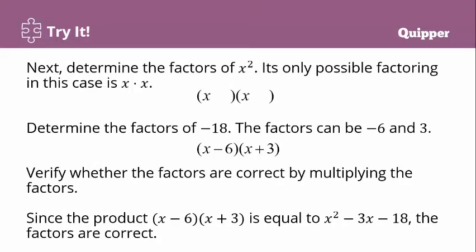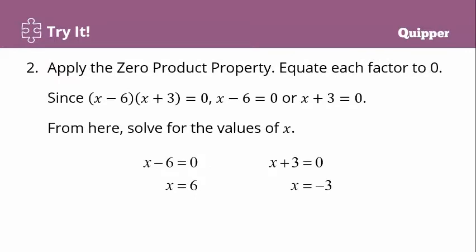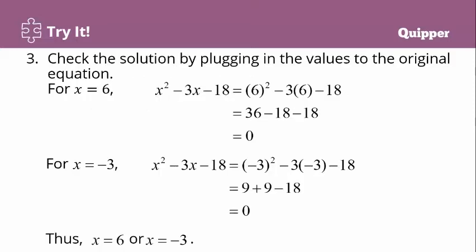Second, apply the zero product property. Equate each factor to zero: since (x − 6)(x + 3) = 0, we have x − 6 = 0 or x + 3 = 0. Applying the addition property of equality, x − 6 = 0 gives x = 6, and x + 3 = 0 gives x = −3. Checking confirms that x = 6 and x = −3 are solutions to x squared minus 3x minus 18 equals zero.